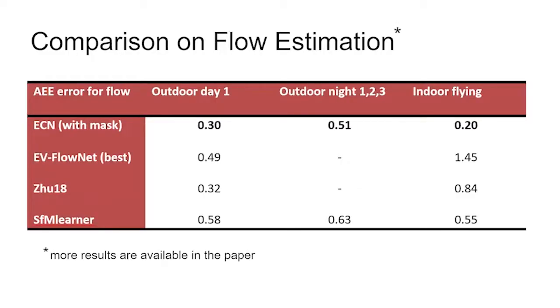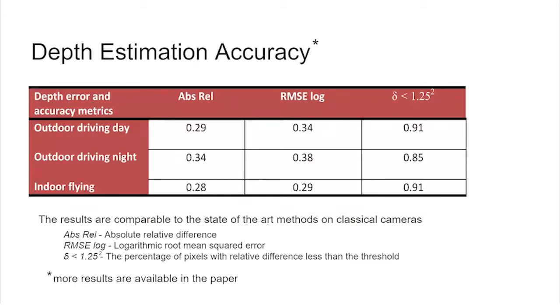ECN's flow estimation outperforms the state-of-the-art and has advantages over the current dominant architecture. ECN's depth estimation is comparable to state-of-the-art methods using standard video input, but on sparse data and training on a much smaller dataset.